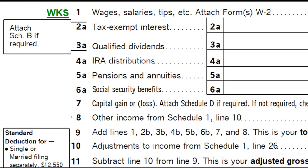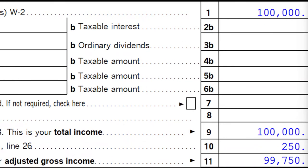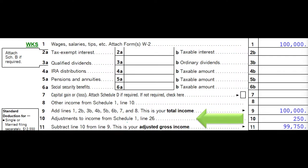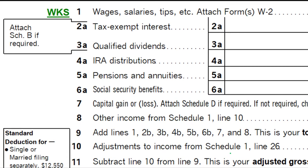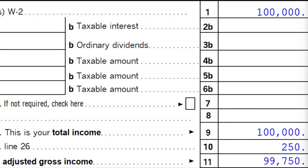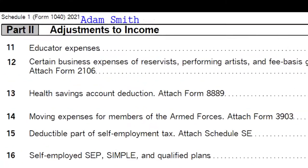This is page one of Form 1040. We're focused on line 10, adjustments to income from Schedule One line 26. That's why some people call it a Schedule One deduction, although Schedule One is a newer form. It used to be called an above-the-line deduction, a term many people have lived with for a long time, so you may still hear it.